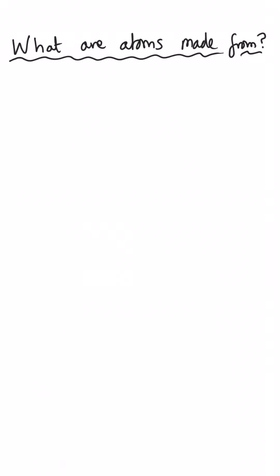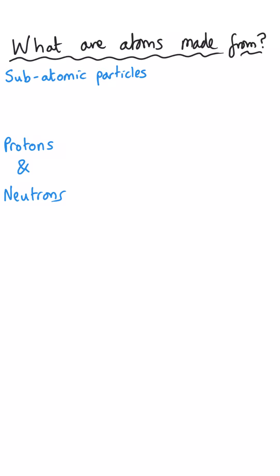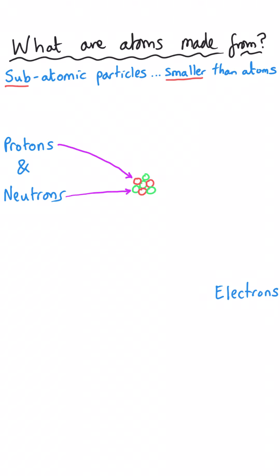All atoms are made up of three types of subatomic particles: protons, neutrons, and electrons. They're called subatomic particles because they are smaller than atoms — that's what the prefix 'sub' means. Two of these particles, neutrons and protons, are found in the centre of the atom, which is called the nucleus.